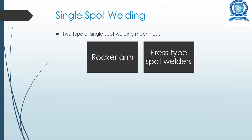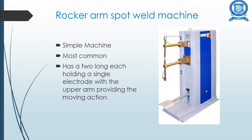There are two types of single spot welding machines: the rocker arm type and the press type. The rocker arm spot welding machine is a simple and commonly used machine. It has two long arms, each holding a single electrode, with the upper arm providing the moving action to apply pressure. The sheet metal to be welded is placed between the electrodes, and pressure is applied using the rocker arm mechanism.